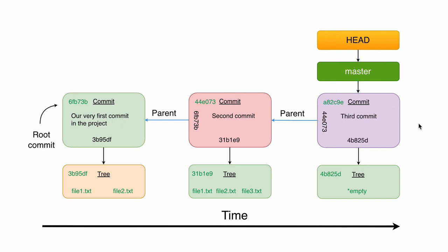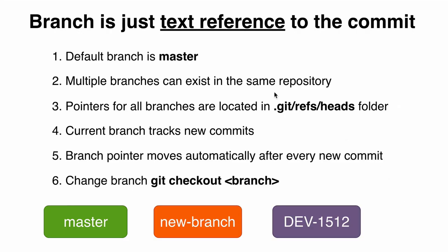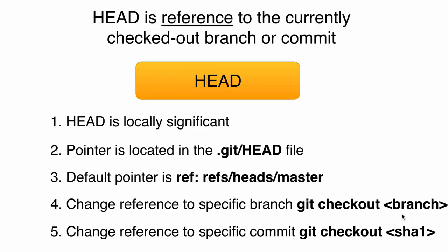We have discussed what a branch is and what HEAD is. Here are the characteristics of each branch and the characteristics of HEAD. Please note that HEAD is only one, but you may have multiple branches in your project. Again, HEAD is only one and it is locally significant. The pointer itself is located in the .git/HEAD file, and the default pointer is this one.